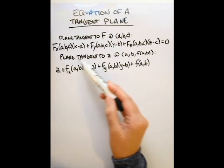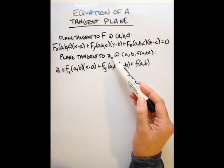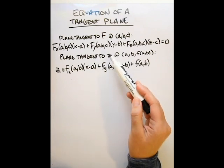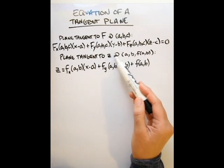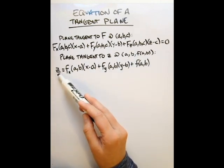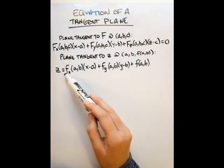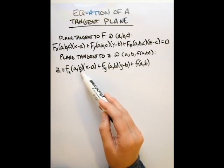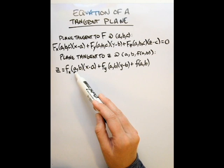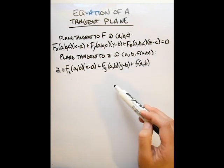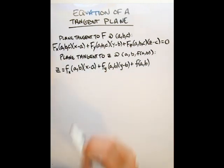The equation of our plane tangent to our surface in the explicit form — where the explicit form was z equals our surface — we're evaluating this at the point AB. The plane is defined as z equals the partial derivatives with respect to x evaluated at the point AB times x minus a, plus the partial derivative with respect to y times y minus b, plus f of AB. Let's look at a couple of examples using each of these forms.